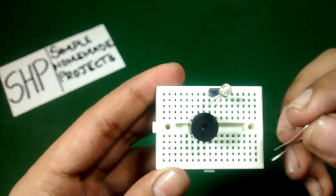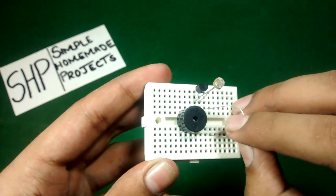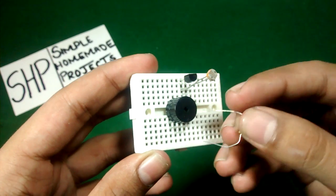Now place the 6.8 kilo ohm resistor between the middle pin of the transistor and the positive terminal of the buzzer.